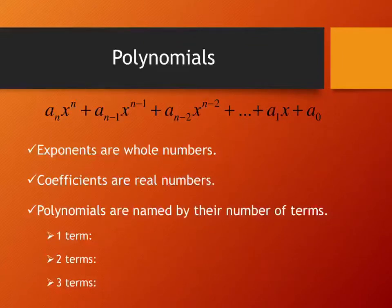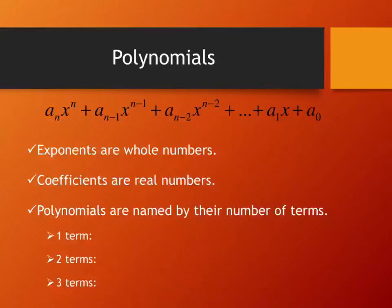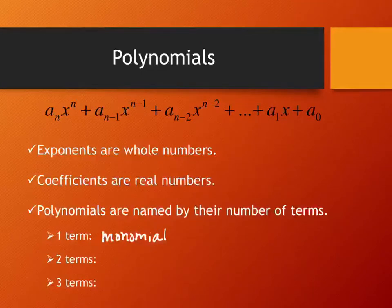There are some polynomials we see frequently enough that they have special names. They're all called polynomials, but some are very special because we see them frequently. If a polynomial has one term — just one number followed by one variable with one exponent — it's called a monomial. The prefix mono, from Latin, means one.